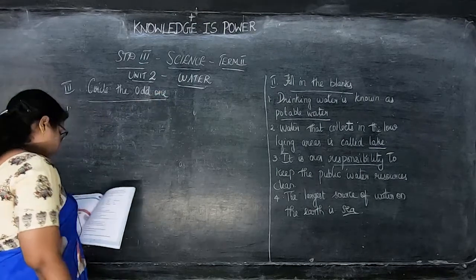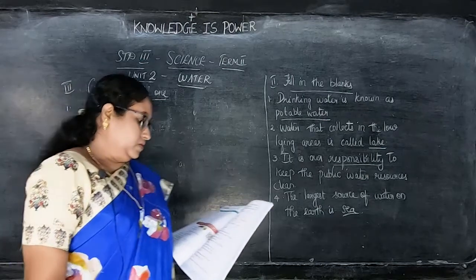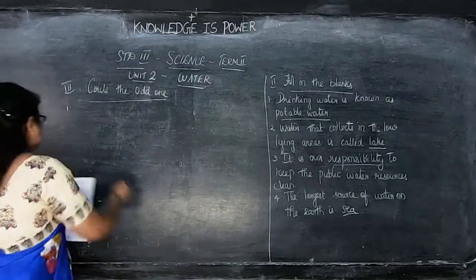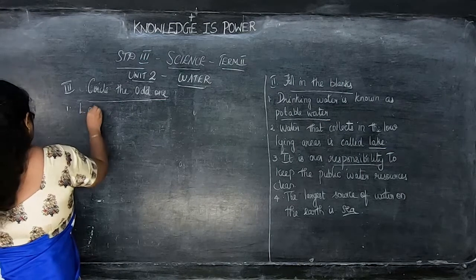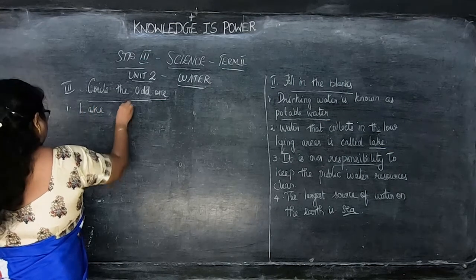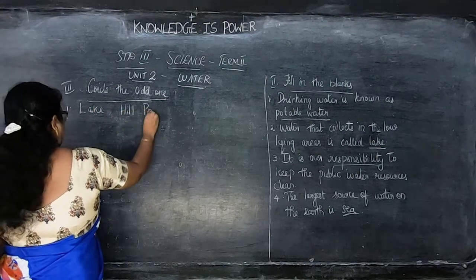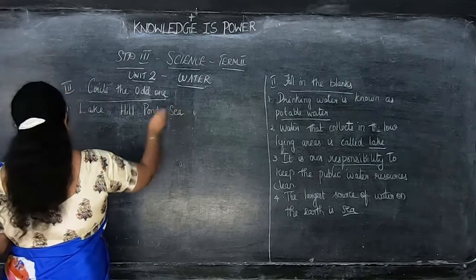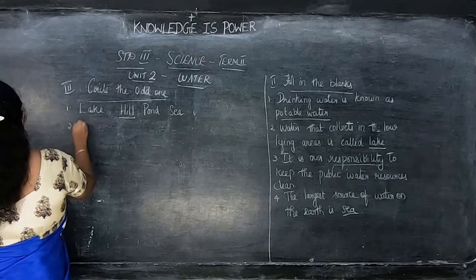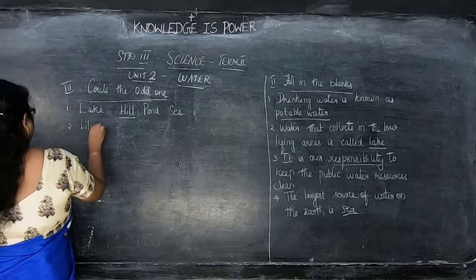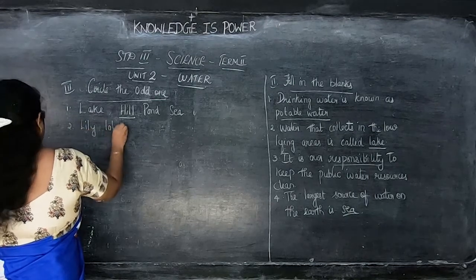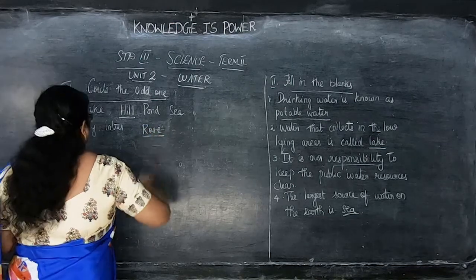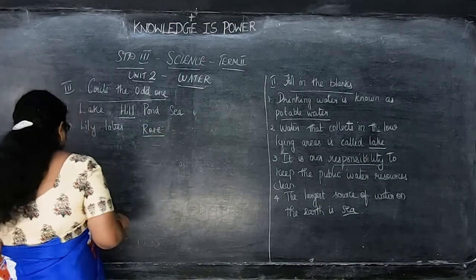Those who have the book, mark it in your book. First set: lake, hill, pond, sea — the odd one is hill. Second set: lily, lotus, rose, water — circle the odd one.